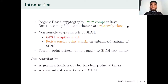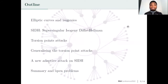In this paper, what we do is that we generalize the torsion points attack in such a way that the attack works as well when you are given images of torsion groups rather than images of torsion points. We use this generalization to design a new adaptive attack on SIDH. This talk will be organized as follows: elliptic curves and isogenies, the SIDH protocol, the Petit's torsion points attack, our generalization, our new adaptive attack on SIDH, and a summary with some open problems.